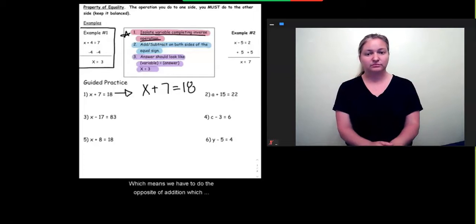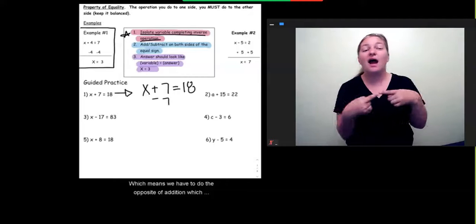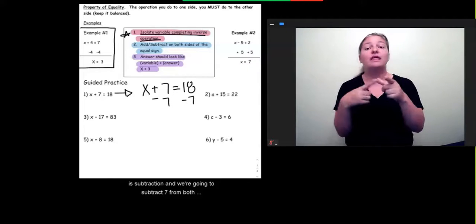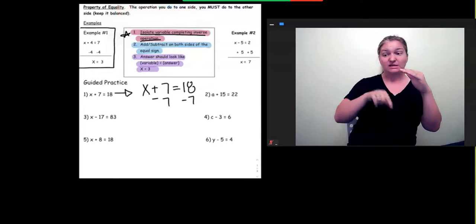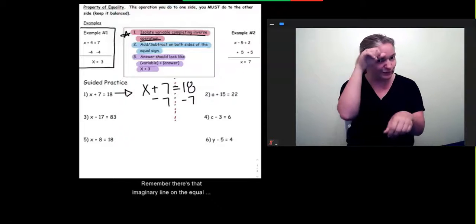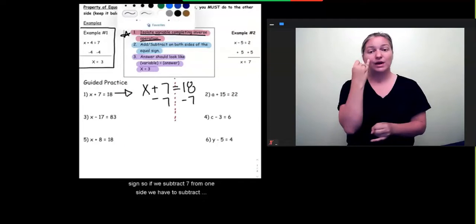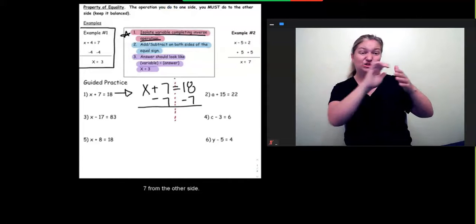Which means, we have to do the opposite of addition, which is subtraction, and we're going to subtract 7 from both sides of the equal sign. Remember, there's that imaginary line on the equal sign. So, if we subtract 7 from one side, we have to subtract 7 from the other side.